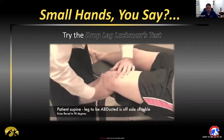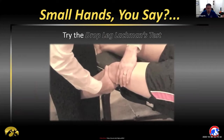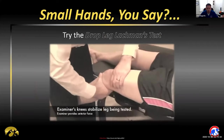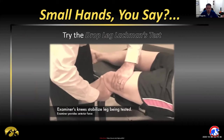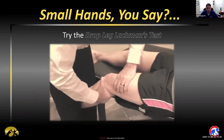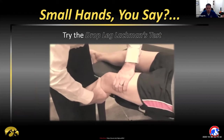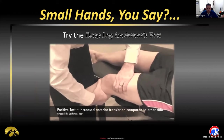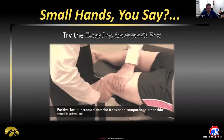In the event that the leg is too big or difficult to maneuver and you have access to a table or elevated surface, the drop leg Lachman's test can be useful. The provider puts the affected leg between their thighs and translates the tibia forward while pushing down on the femur. This can give you a leverage advantage rather than trying to move the whole leg in identifying a potential ACL tear.